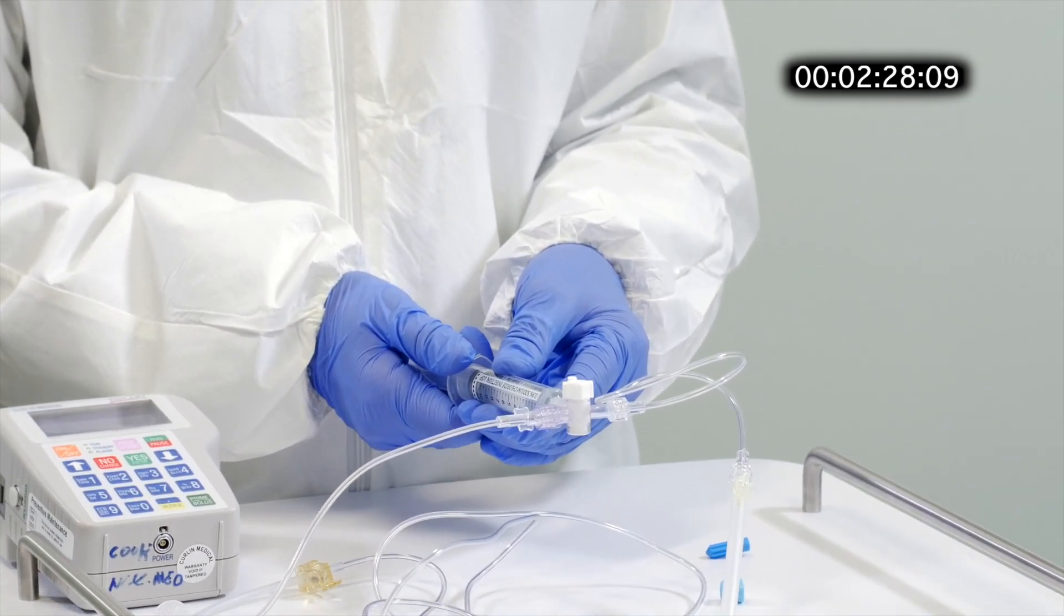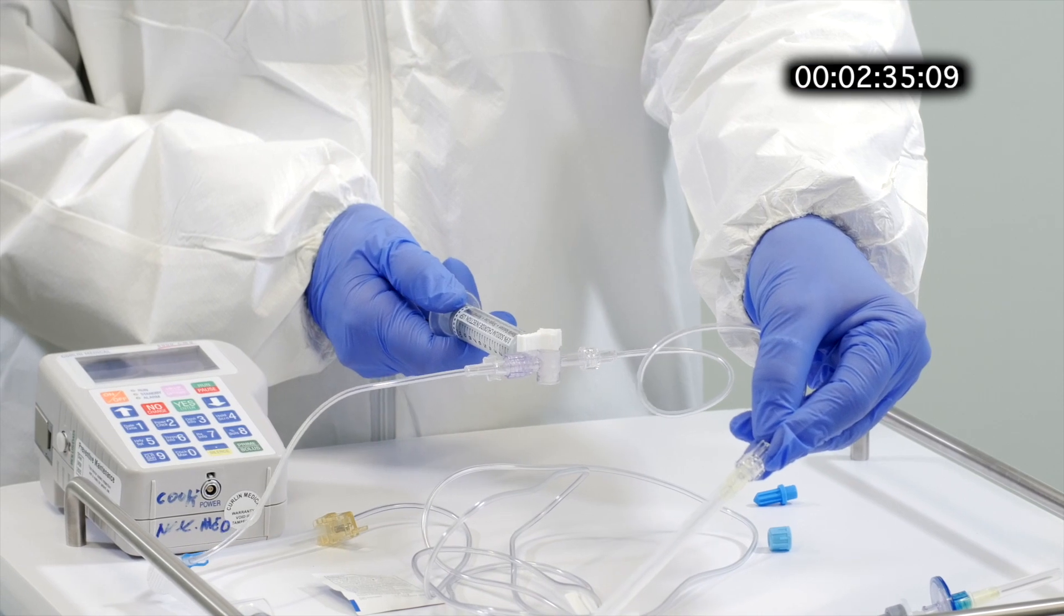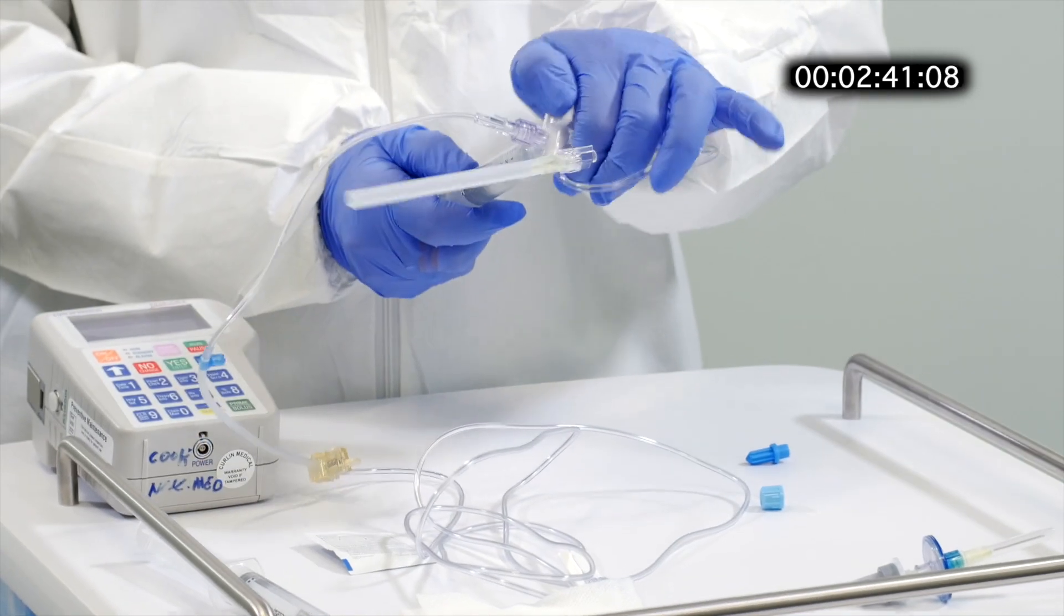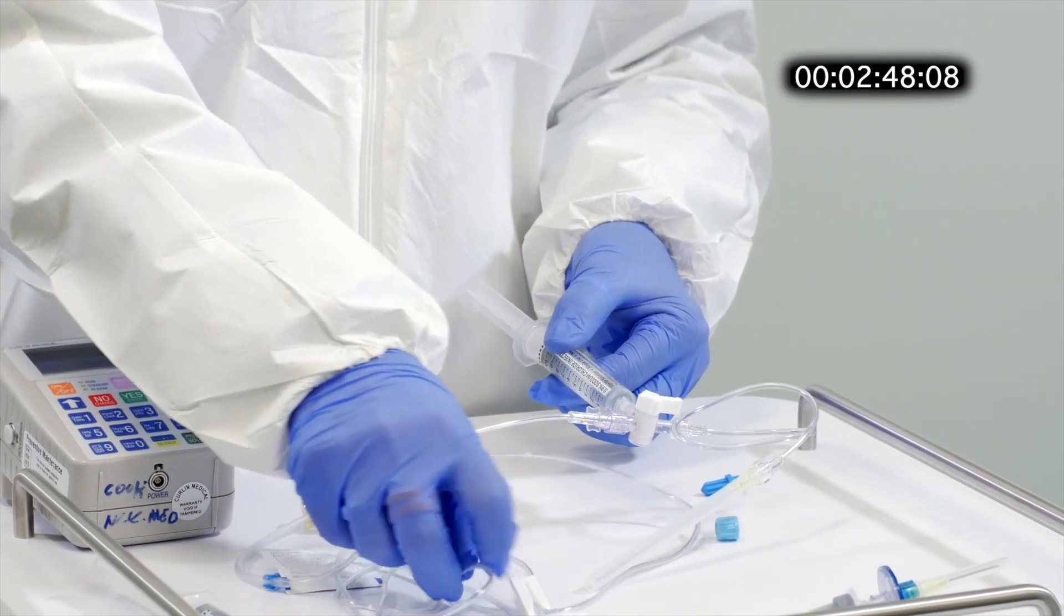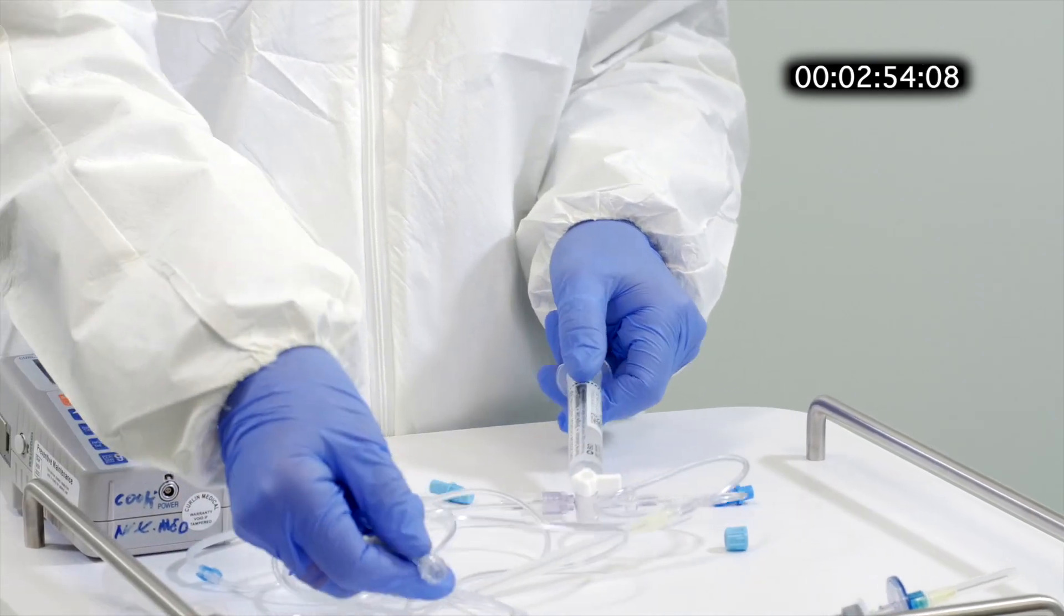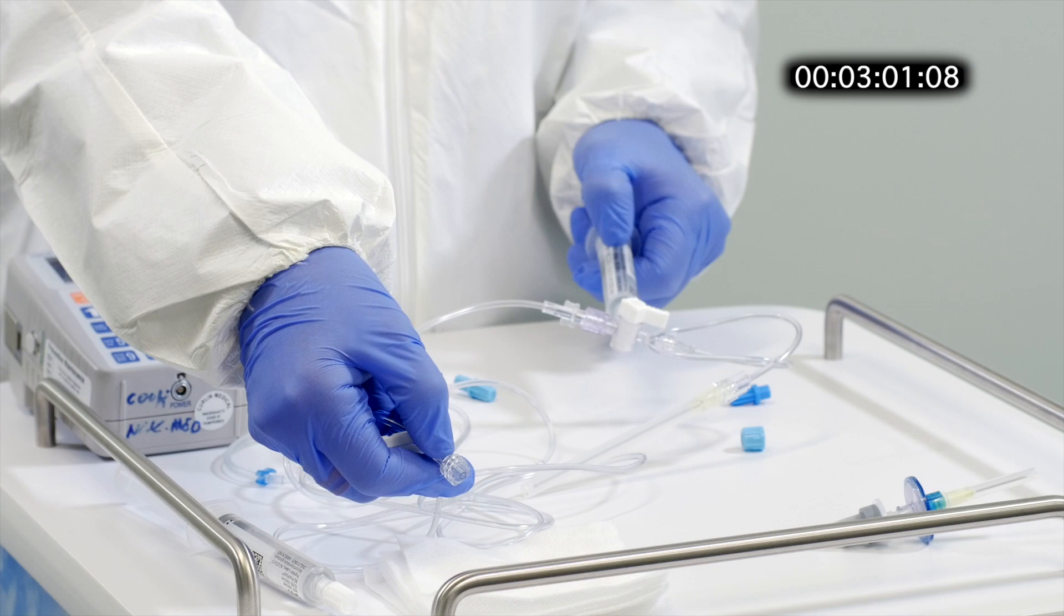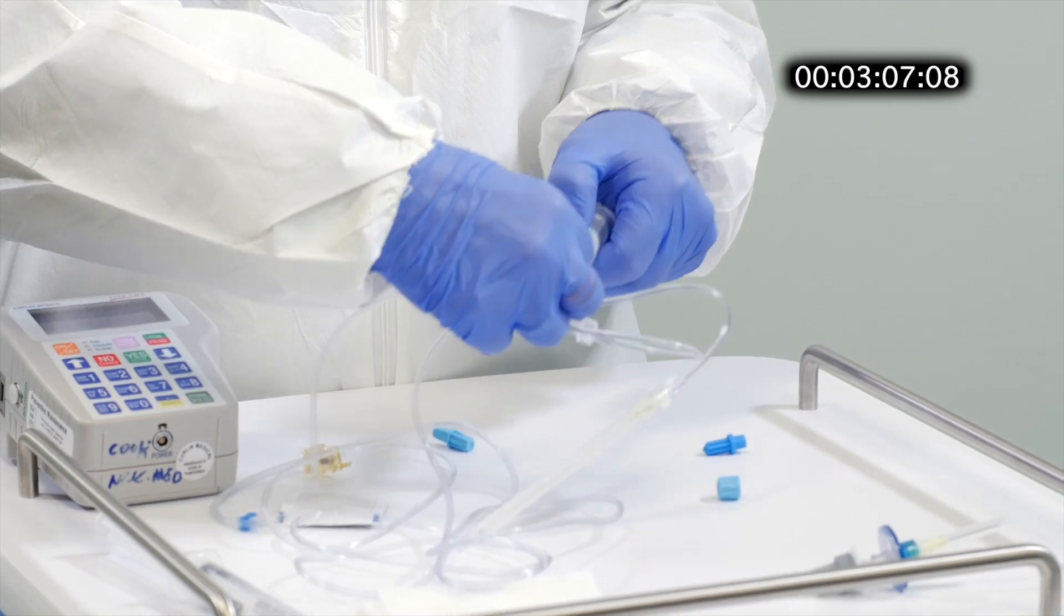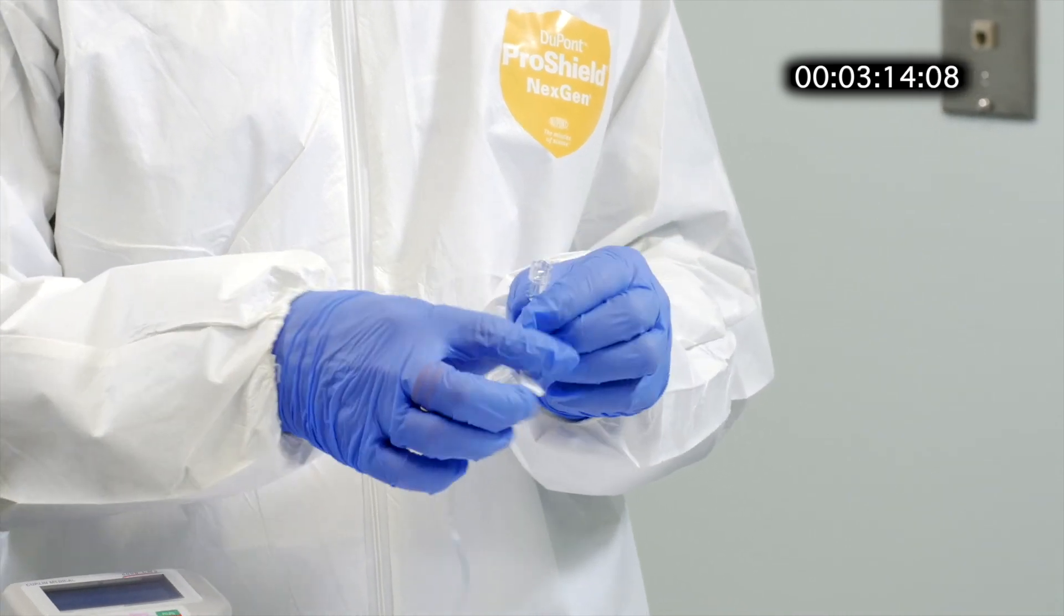The next step is to bleed the lines of all air before connecting it to the pump. The first step is to bleed the side that is going to go into the MIBG vial, and that's the one with the 3.5-inch needle. The next step is to bleed the entire line that will eventually be connected to the patient. Cap the end to make sure that aseptic technique is followed.